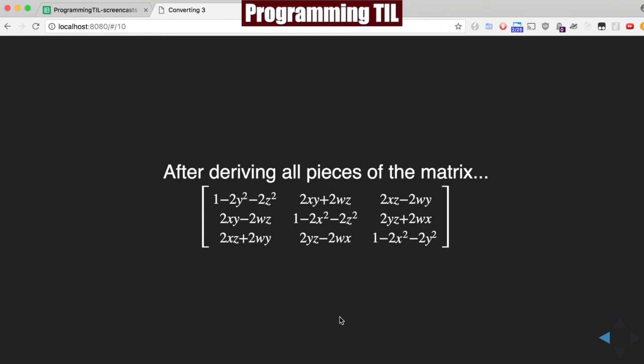You're able to just derive each of those. This is the formula that we wanted. This is the formula that allows us to convert from a quaternion to a matrix. That's it for this episode. If you like what you saw, go ahead and subscribe and give a like. Share on social media if you will, and go to programmingtil.com and sign up for a newsletter. Have a great one. Thanks.